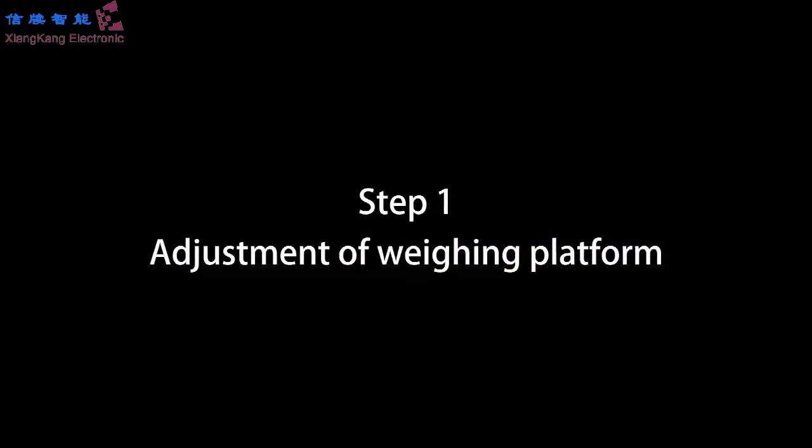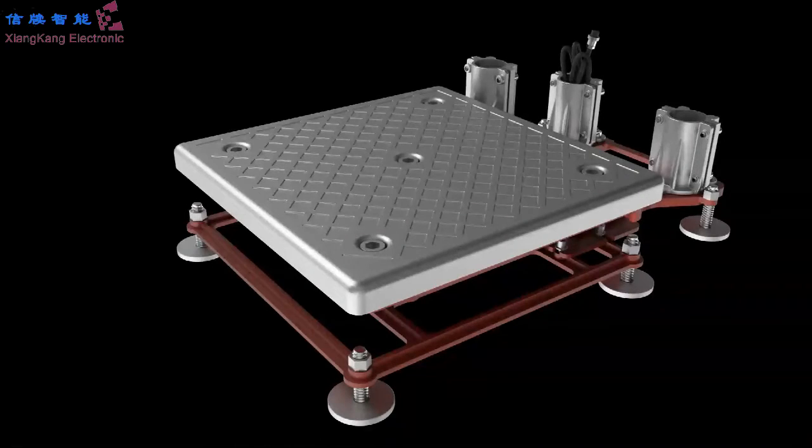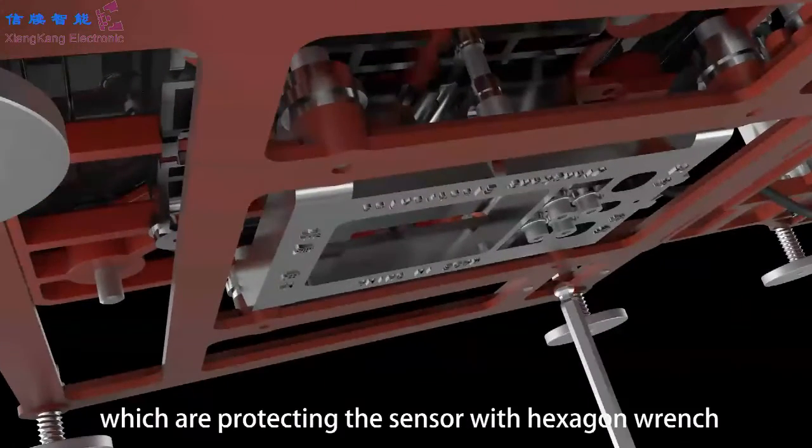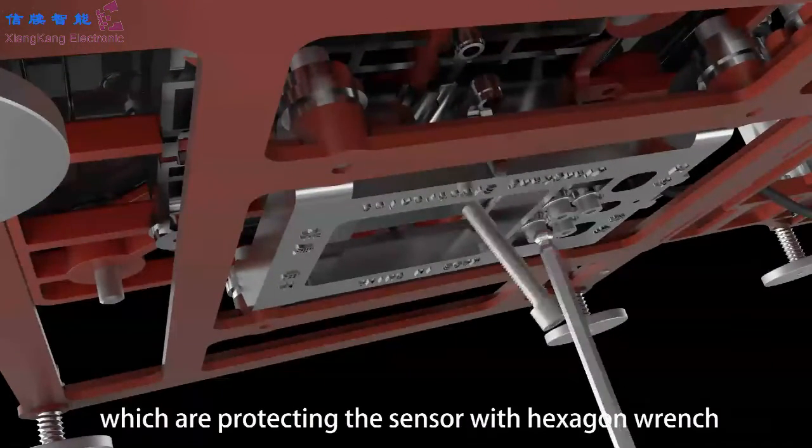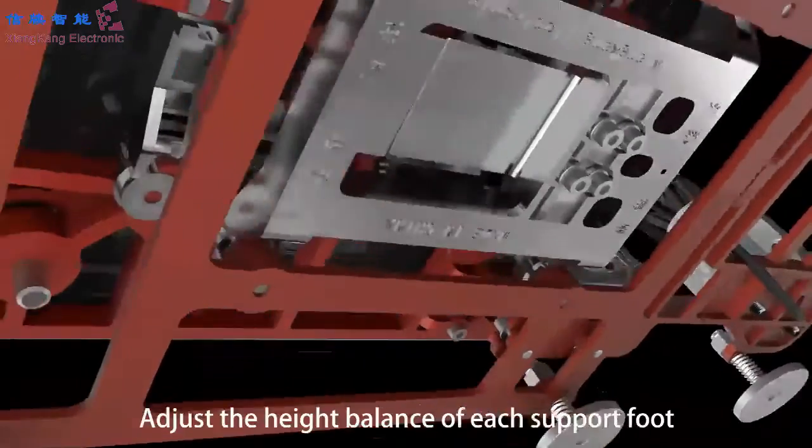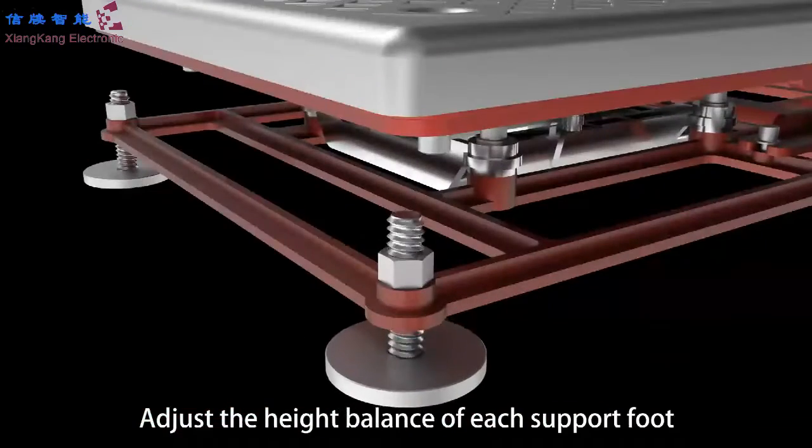Step 1: Adjustment of weighing platform. Lift the scale. Remove the two screws which are protecting the sensor with hexagon wrench. Adjust the height balance of each support foot.